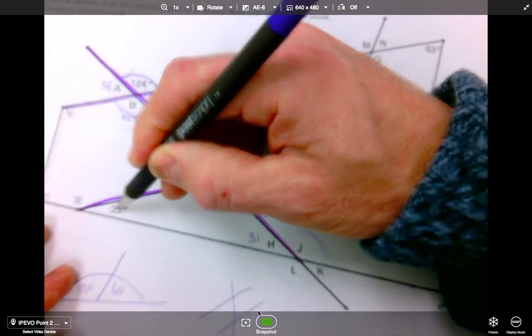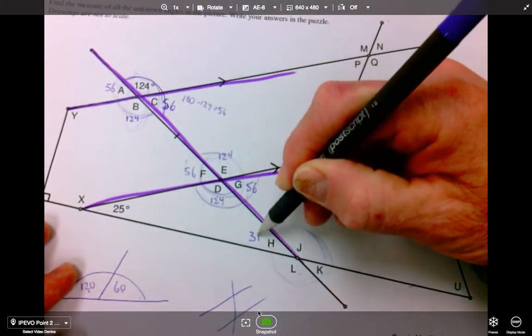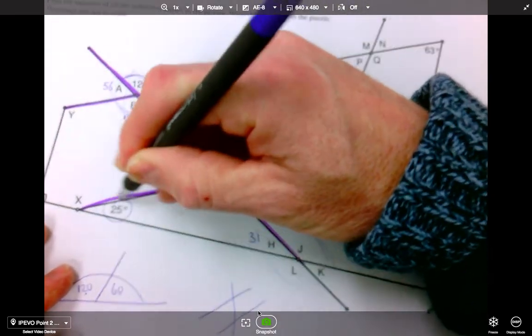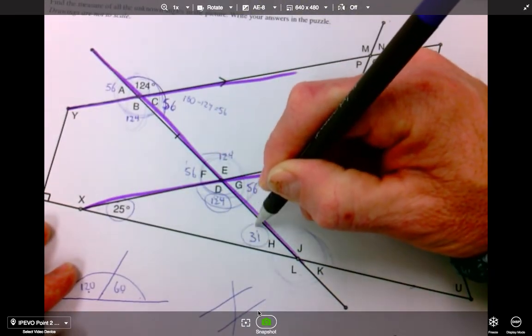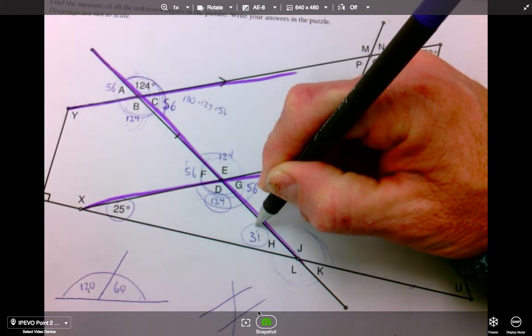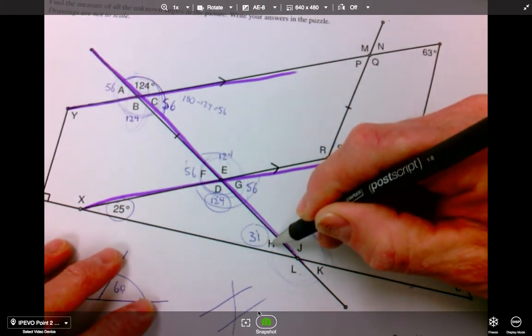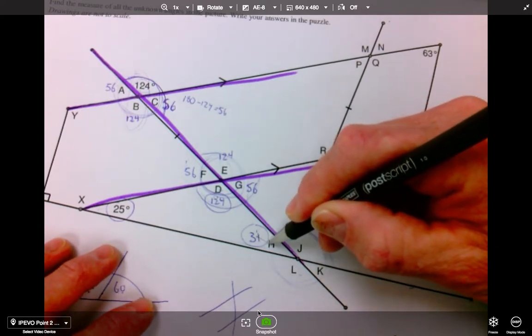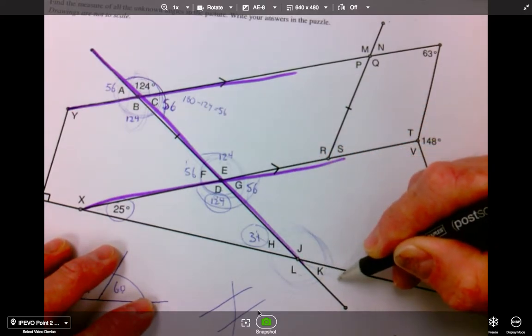or what I could do is 180 minus 124 minus 25, and that will get me 31. So I know that this plus this plus this add up to 180, right? This and this and this equal 180. Perfect. Well, now that I have this angle, I can solve the rest of this. If this is 31, the opposite of it is 31.